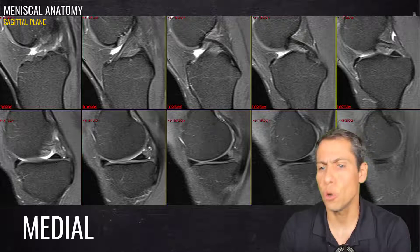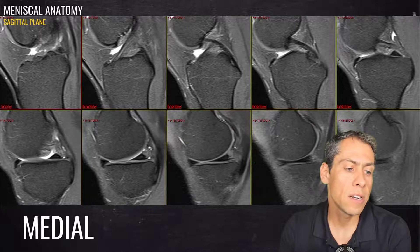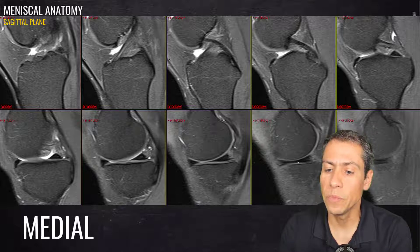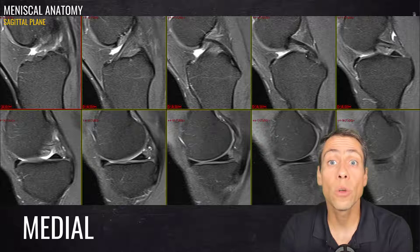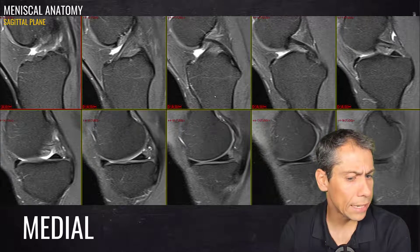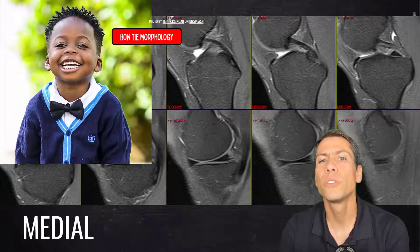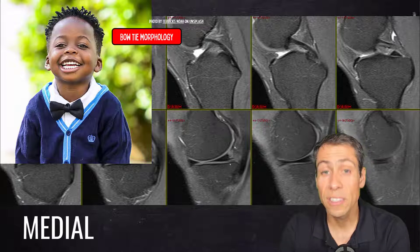Now I'd like to show the normal meniscus on the sagittal plane. We can see the anterior horn and the posterior horn on the short axis, and the meniscal body on the long axis. Here is the anterior meniscal root ligament, and here is the posterior meniscal root ligament — I'll save root ligaments for another video. We can appreciate the classical bowtie morphology that we see on MRI of the knee when analyzing the menisci on the sagittal plane.